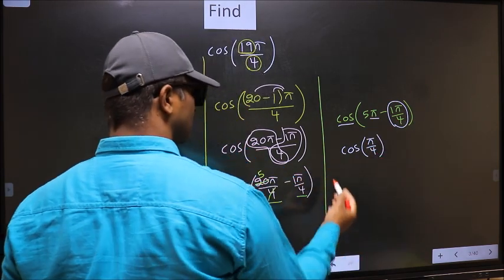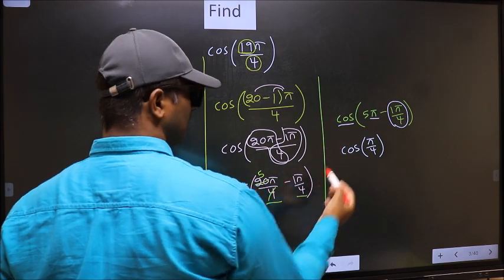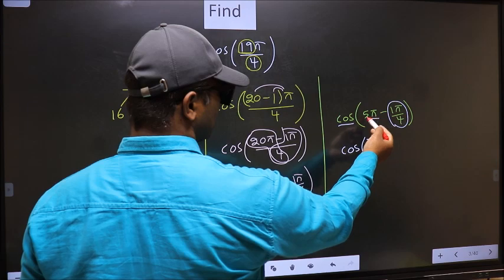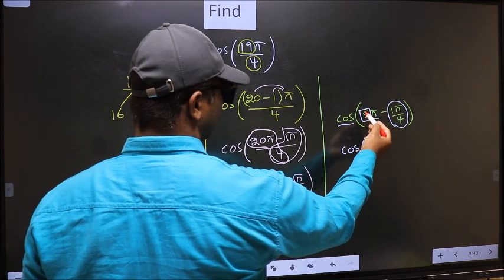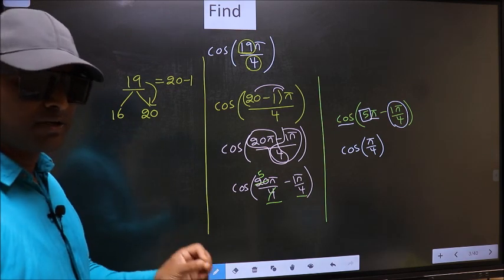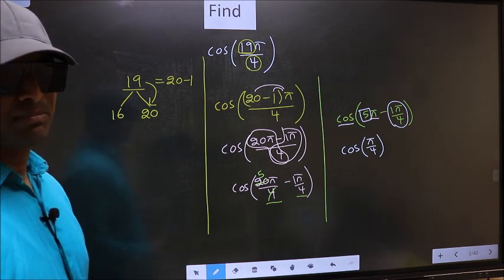Now the question is, will we get here plus or minus? To answer that, you should look at the number before π, which is 5. And 5 is odd, and all the odd multiples of π lie either in the second or in the third quadrant.